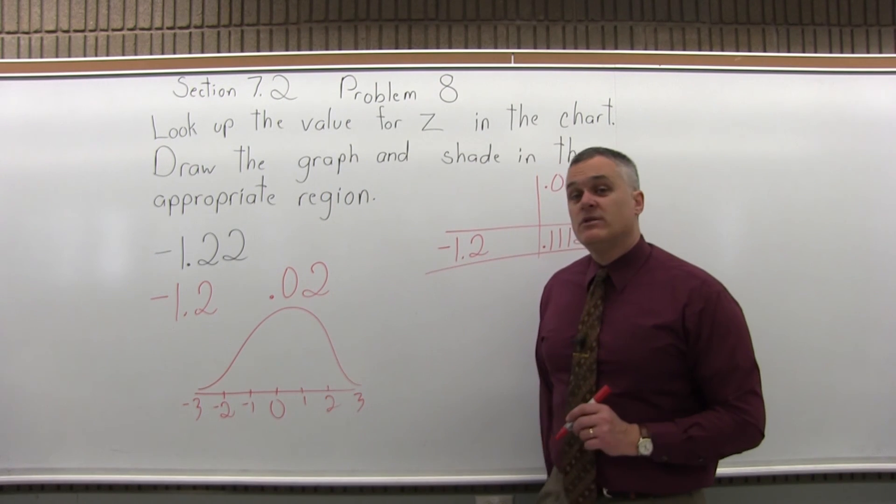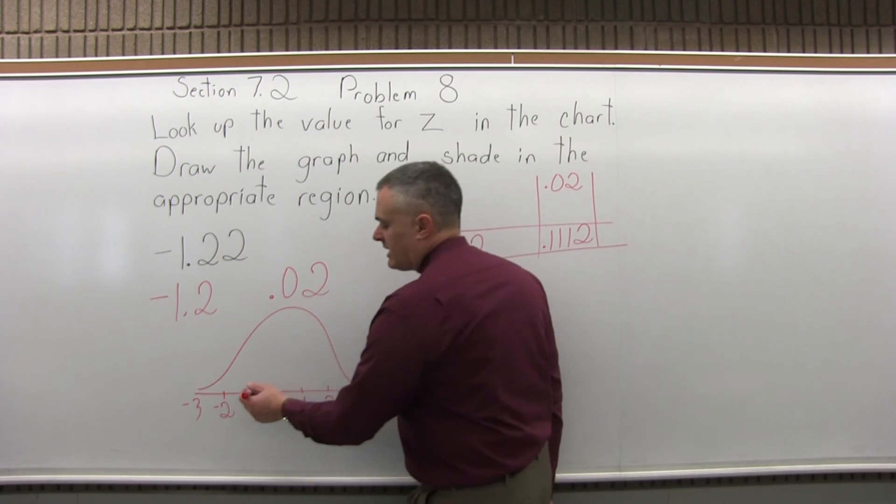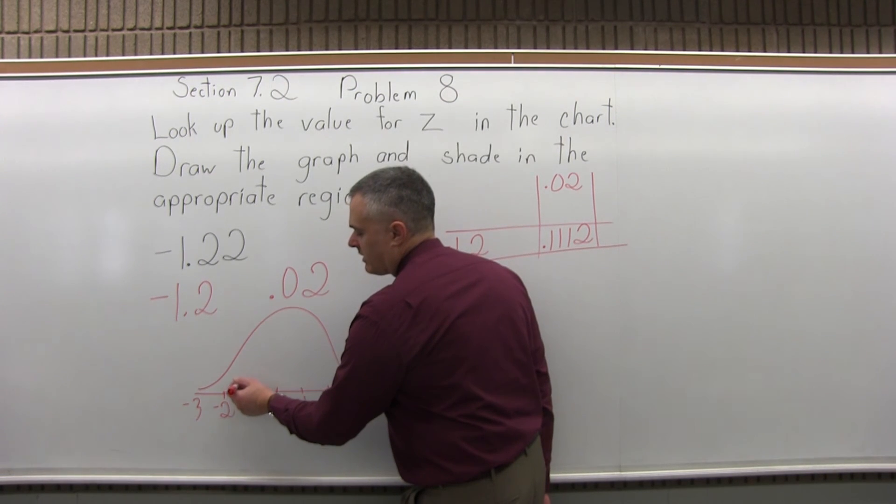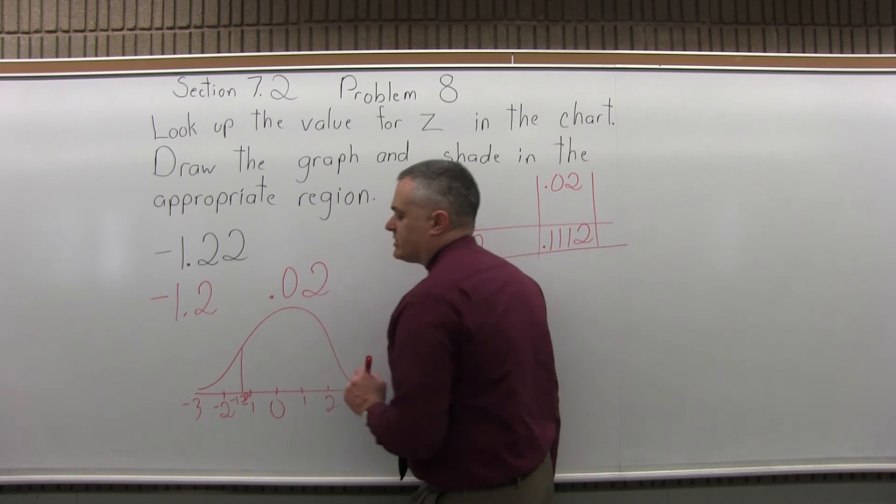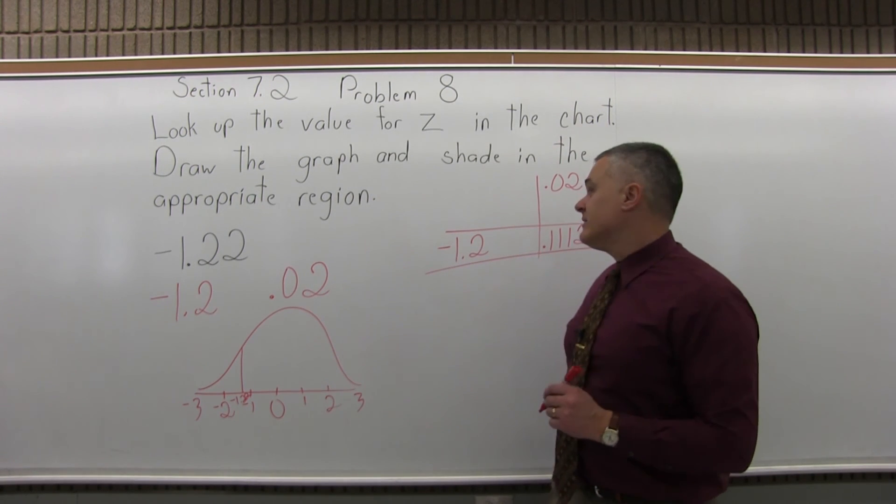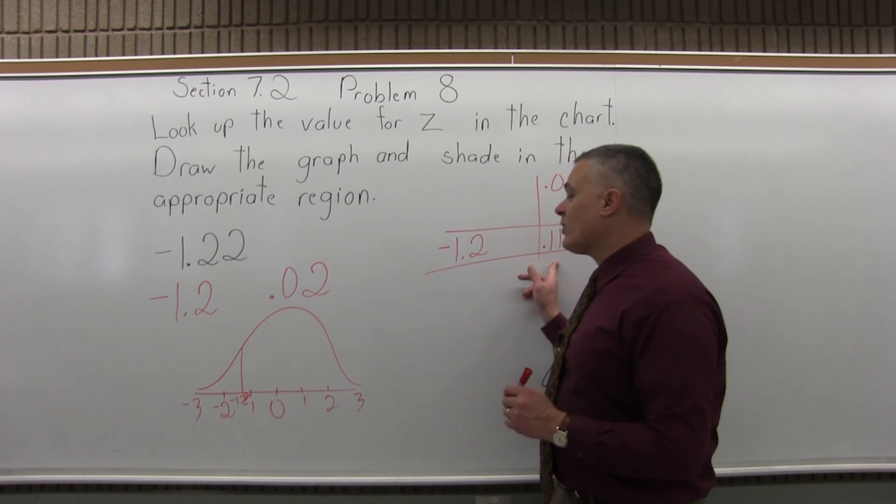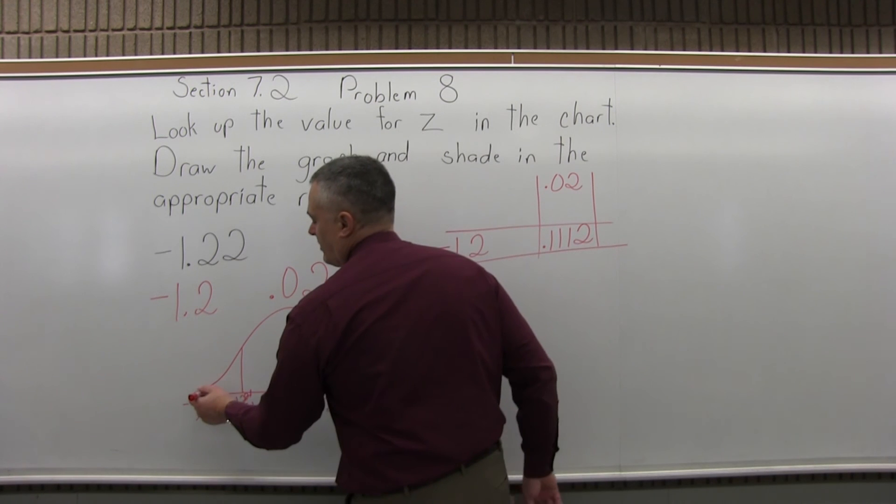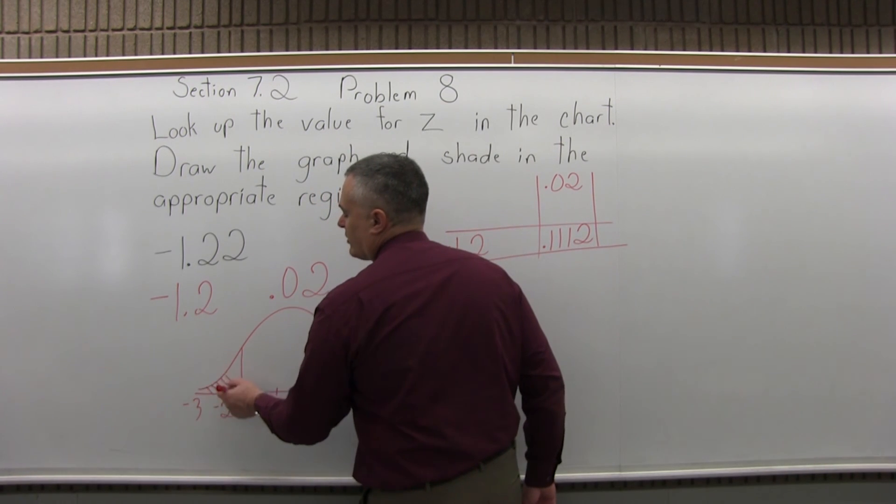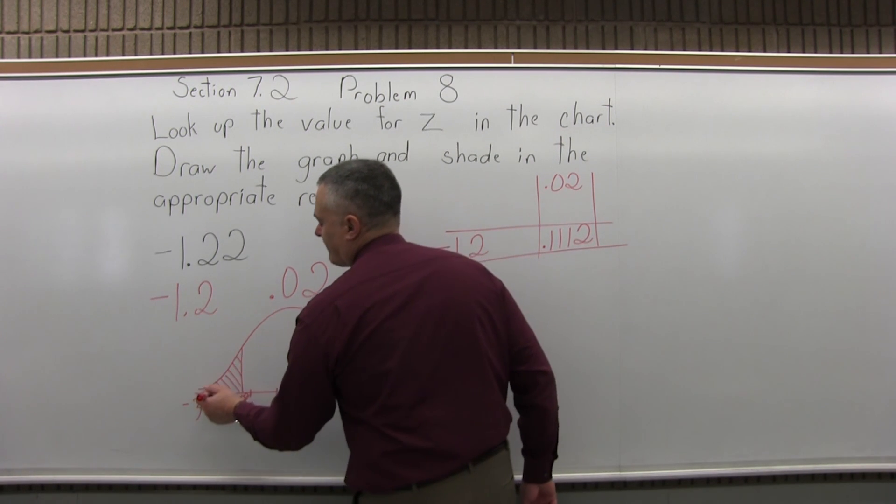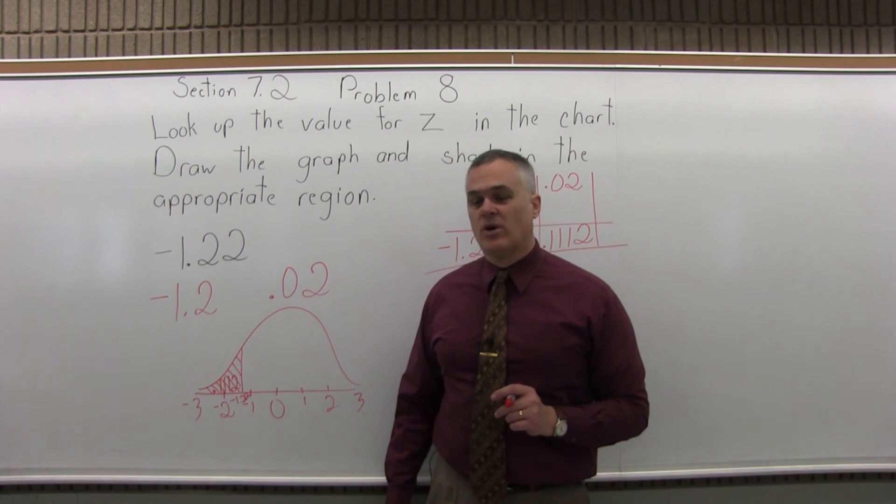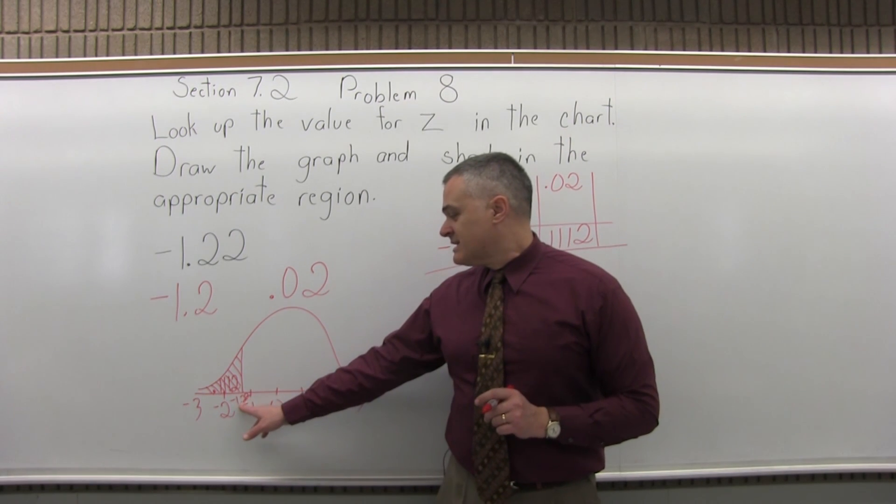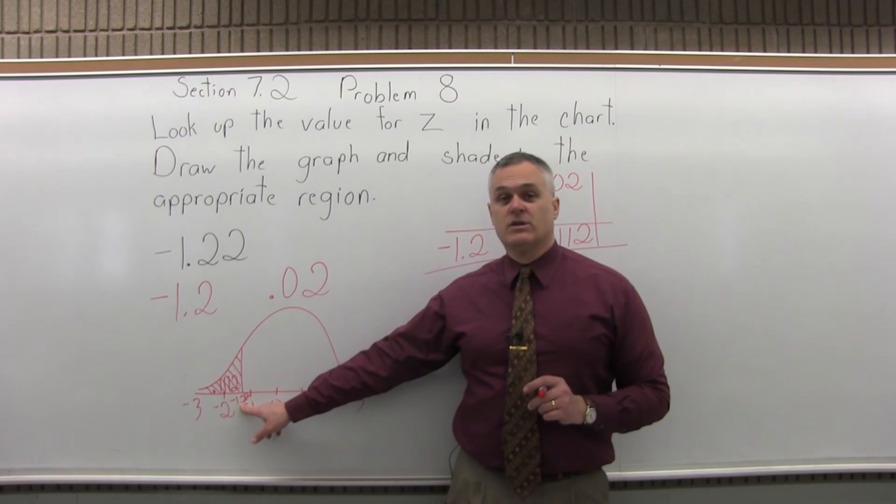Now negative 1.22 by eye is about negative 1.25, which I'll draw on the bell curve. And the answer from the chart, 0.1112, is the probability of being less than that value or to the left of it on the graph. So there's about 11% probability, slightly more, of being less than the negative 1.22.